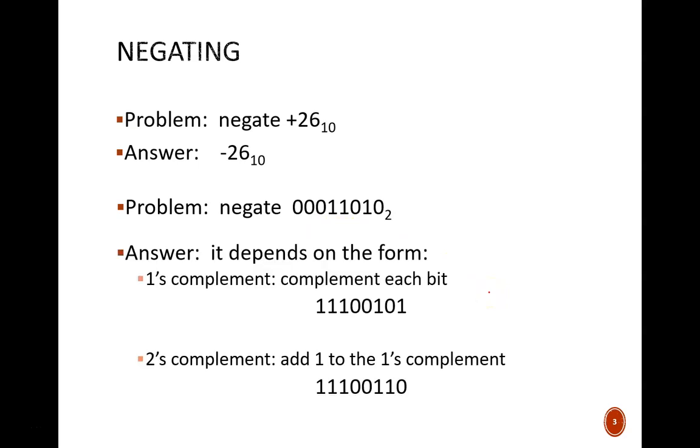If you remember our lessons on signed binary numbers, you know that we need to establish the form of the numbers. In one's complement form, the negated value would be 1110 0101. This comes from inverting each bit individually.